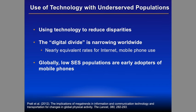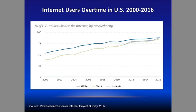Initially the literature showed that people of lower income or more diverse backgrounds had less access to technology — the digital divide. But over time, we found the digital divide is going away. Globally, lower-SES populations are actually earlier adopters, particularly of mobile phones. There are many low-income and refugee populations for whom a mobile phone is the only way to reach them. Internet use has been increasing over time and is becoming more and more available to everybody.